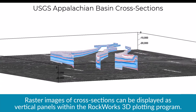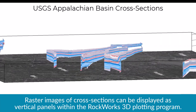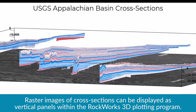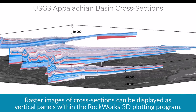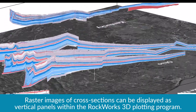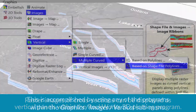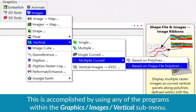Raster images of cross sections can be displayed as vertical panels within the RockWorks 3D plotting program. This is accomplished by using any of the programs within the Graphics, Images, Vertical submenu.